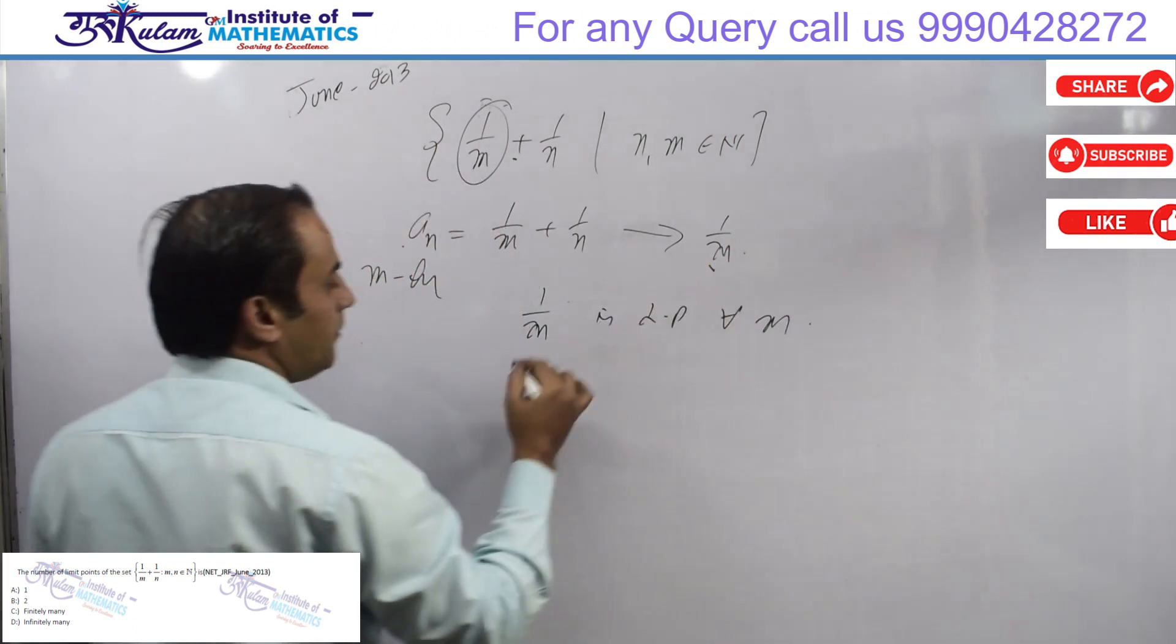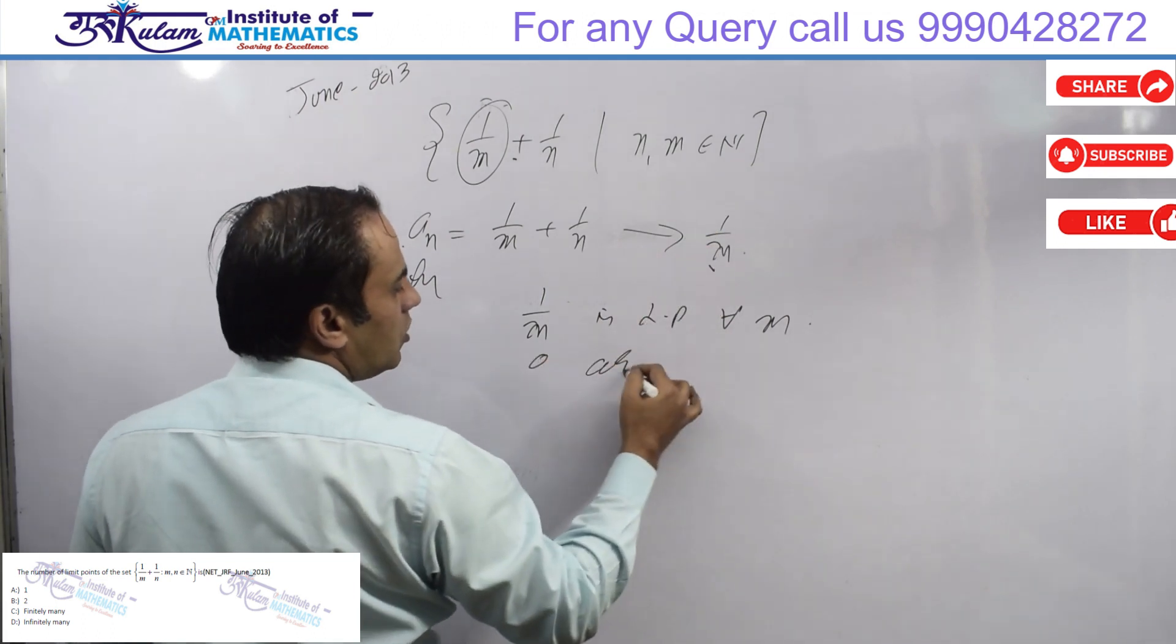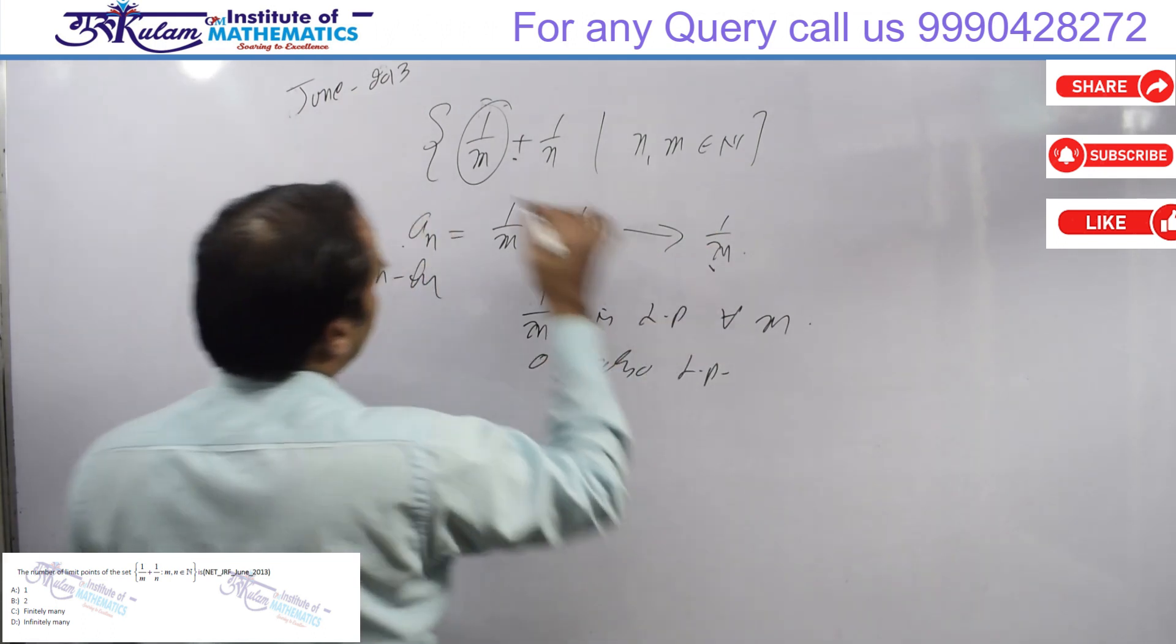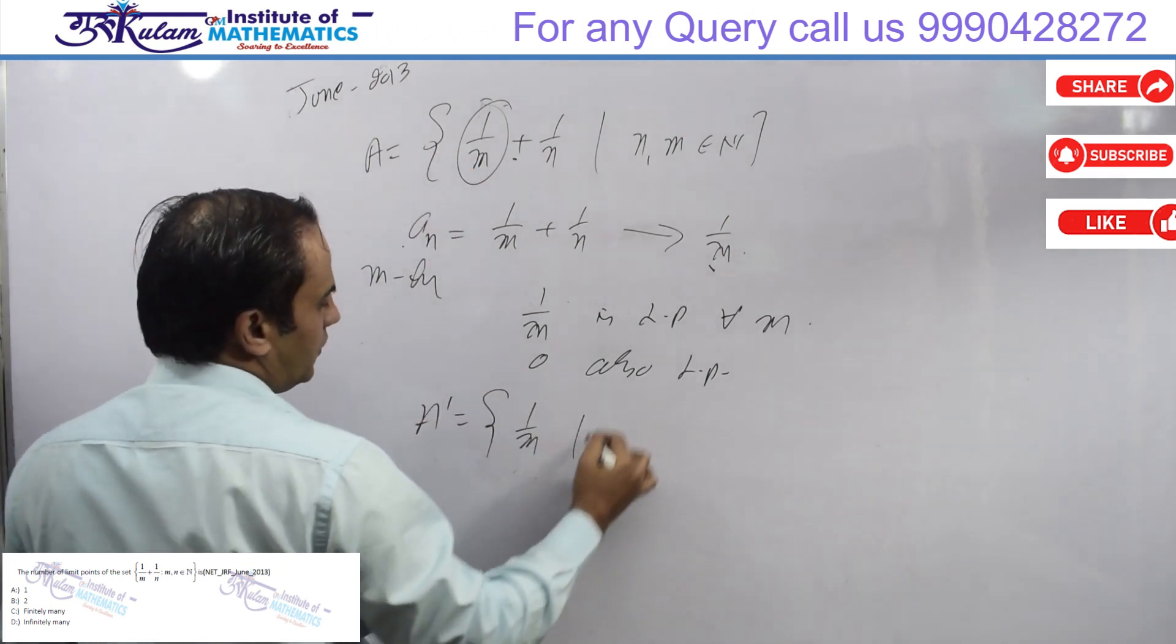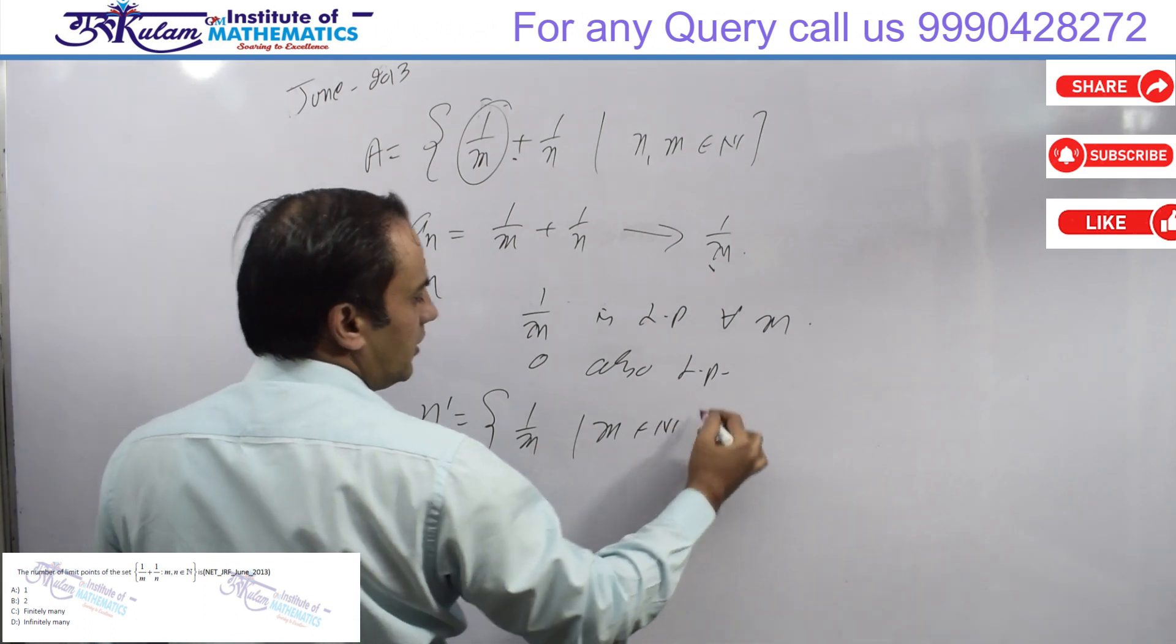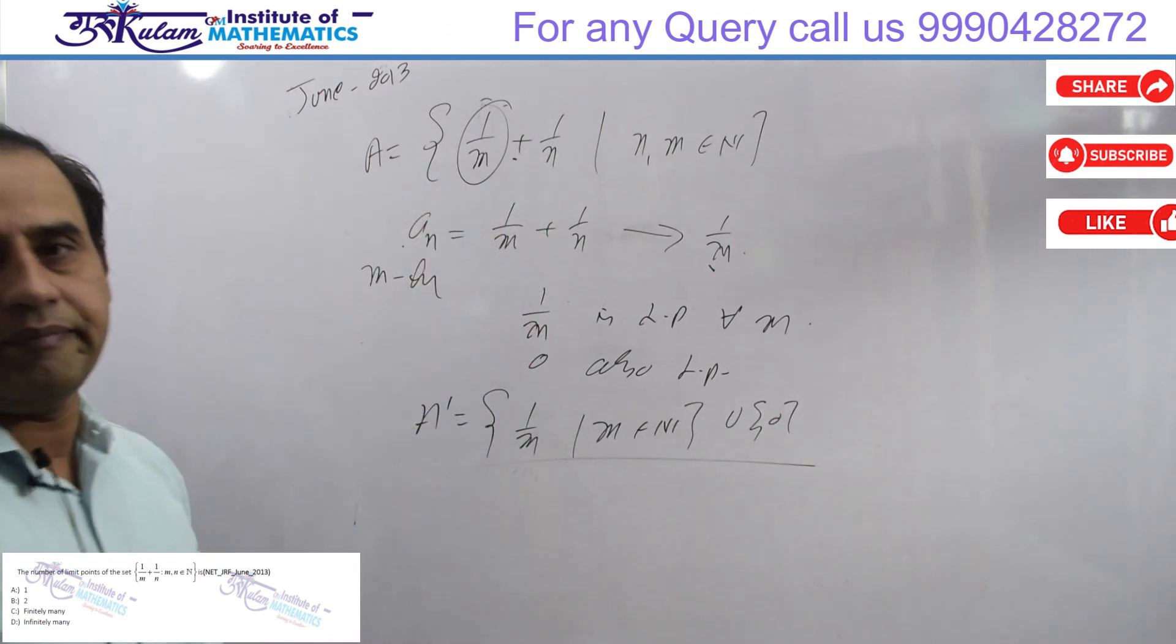And when m tends to infinity, then 0 is also a limit point. So if this set is A, then A' is 1/m with m belongs to natural numbers, union singleton {0}. So this is the set of limit points.